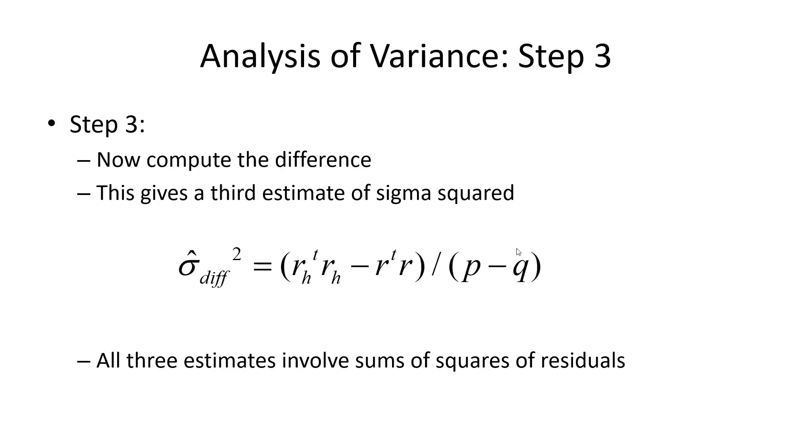We also divide by the corresponding number of degrees of freedom. And this number of degrees of freedom is the additional variables that in the hypothesis I'm setting to zero. So if I'm trying to set three variables to zero, then p minus q is three. This is always positive because q is smaller than p.